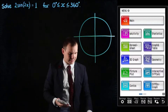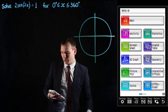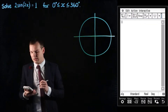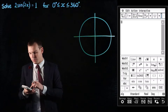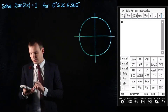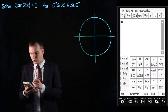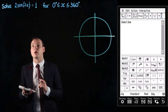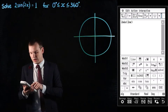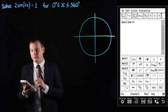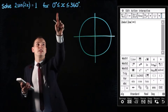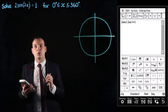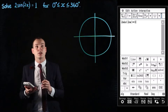Starting off with our CAS calculator, we're going to go into the main menu. Next we want to bring up the keyboard so that we can type in our equation, which is 2 times sine of 2x, and then we need to close off that bracket. That's going to equal 1, and then we need to deal with the domain or the restriction over where we're trying to find solutions.